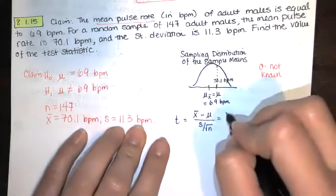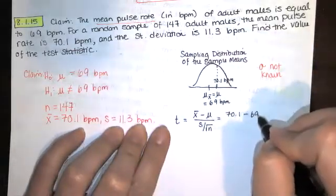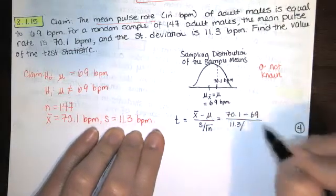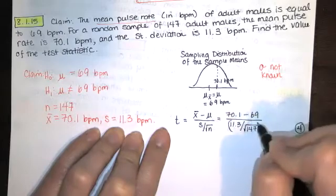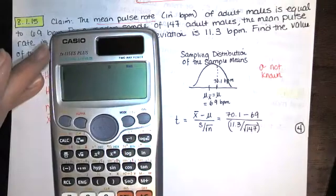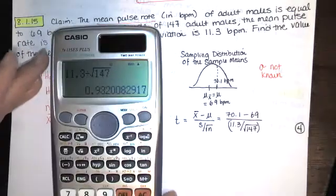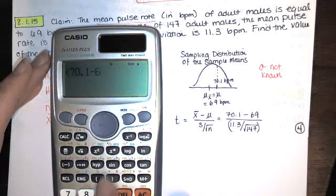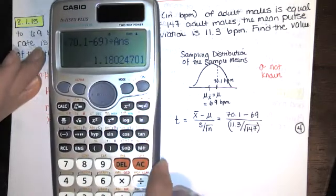So that is x-bar, which equals 70.1, and we're subtracting the mean we're testing against, that's 69. And then we're dividing by the sample standard deviation, which happened to be 11.3, divided by the square root of the sample size 147. So what I'll do is I will do that denominator first: 11.3 divided by the square root of 147. Hit enter, you get that. And I want that numerator divided by that answer. So I'll type open parentheses 70.1 minus 69, close parentheses, divided by answer. And then I'll hit equals. And that's what I get.